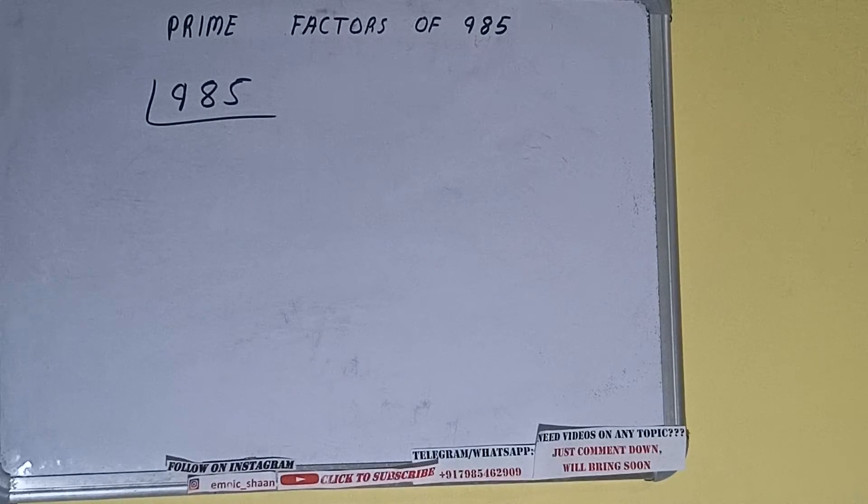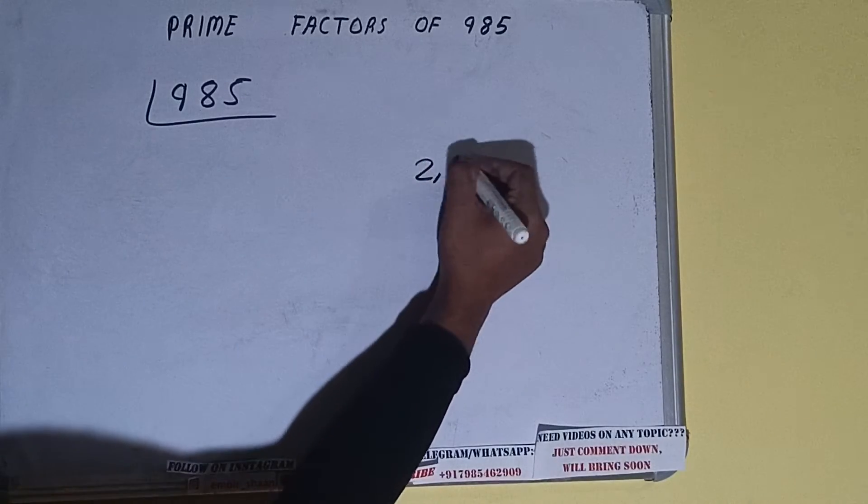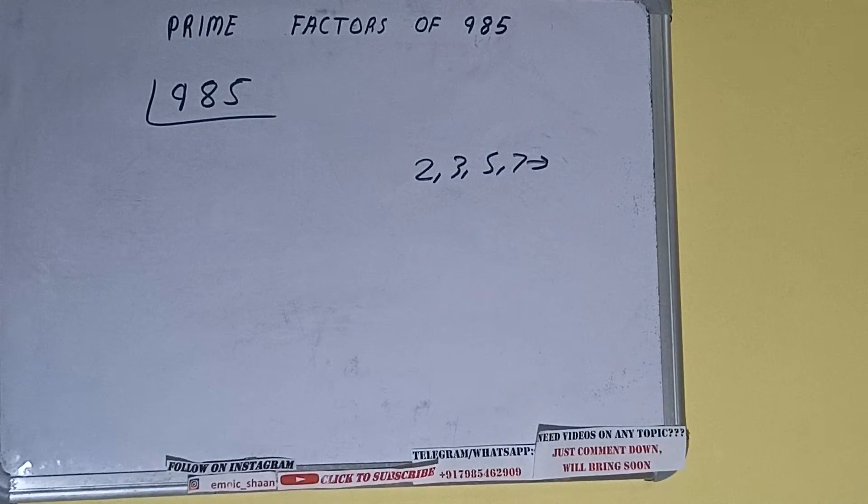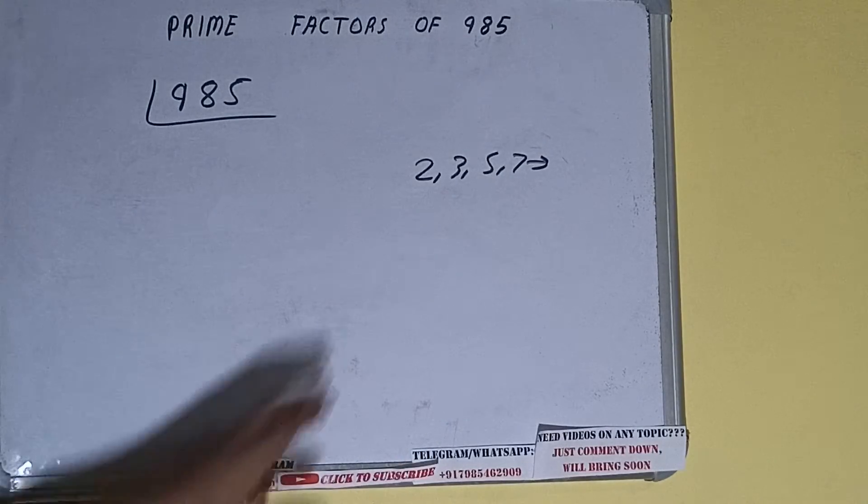Prime numbers are numbers that are divisible by one and the number itself, like two, three, five, seven, and so on. All right, so we'll check with the lowest prime number we have, that is two. Is the number 985 divisible by two?